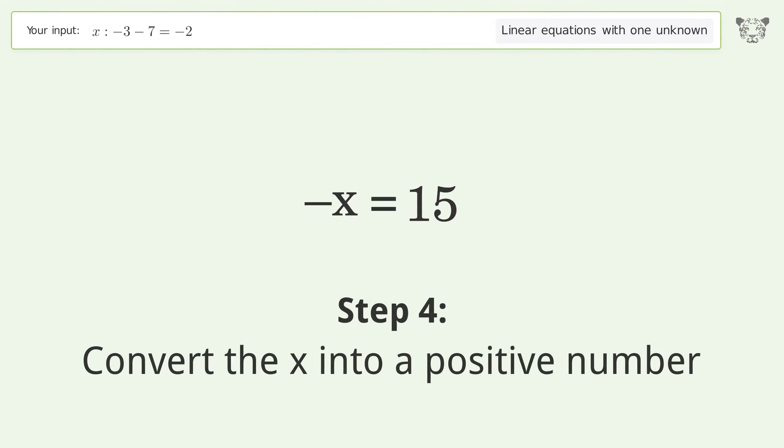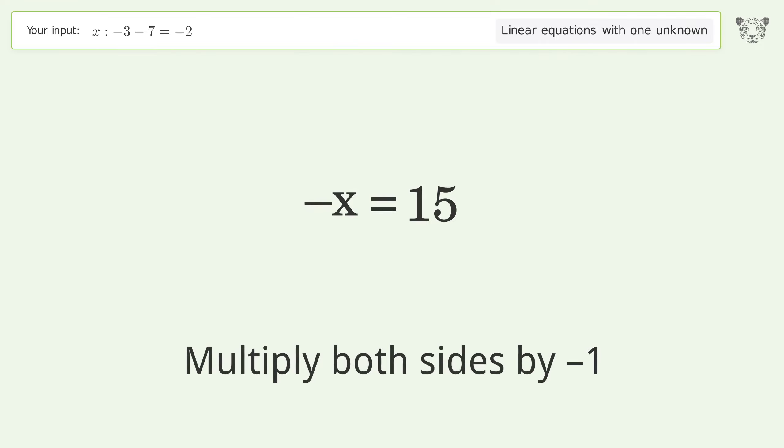Convert the x into a positive number. Multiply both sides by negative 1. Remove the 1s. Simplify the arithmetic.